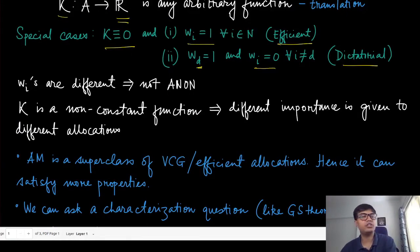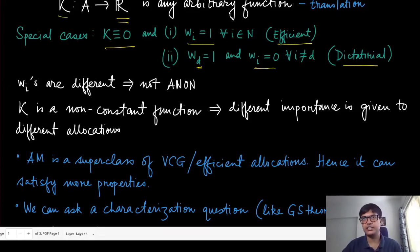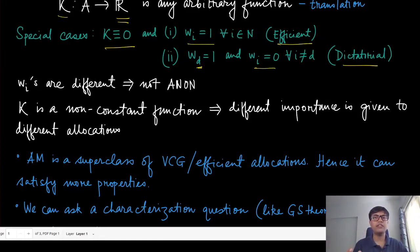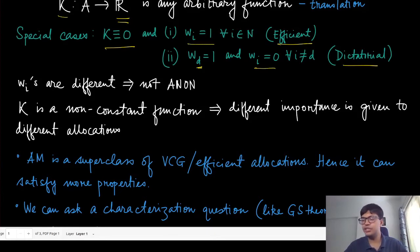Because the weights w_i can be different for different agents, this mechanism is not anonymous anymore. In the efficient allocation it was anonymous because permuting agent names does not change the sum of valuations, so the outcome stays the same. But with different weights, permuting agents assigns different weights to different valuations, which may change the allocation — so anonymity is lost. This is one important difference from the VCG mechanism.